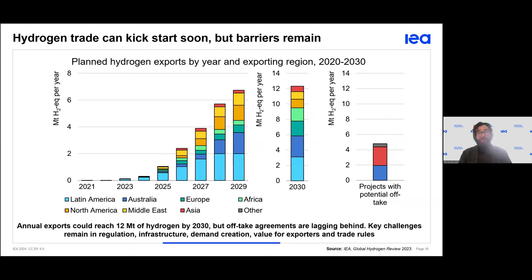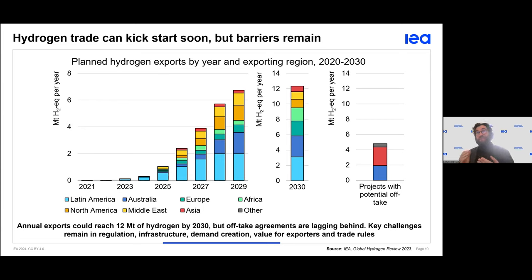Regarding trade: although production is becoming more evenly distributed around the world, cross-border transport of hydrogen is currently mainly conducted among OECD countries, primarily due to infrastructure challenges. Hydrogen requires special transportation methods, and although it can be transported in the form of ammonia, there is a conversion problem afterwards.